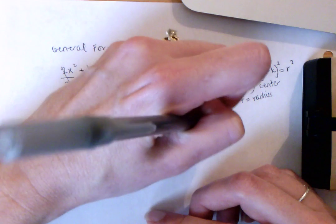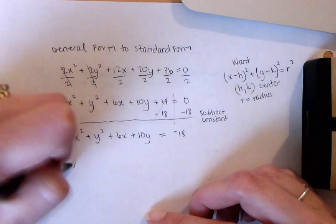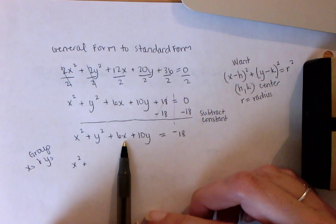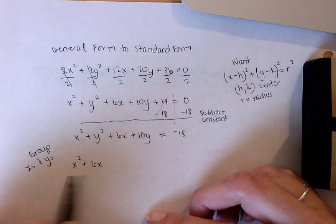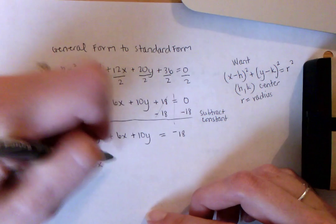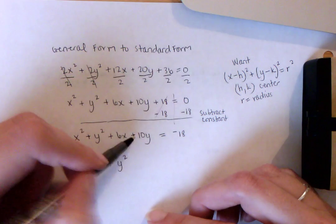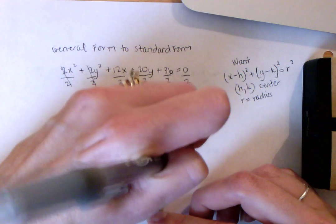Now what I need to do is group the x's and y's together. I want to do x squared plus 6x because that has the x in it, so I grouped those together, and now I'm going to group the y's together, so plus y squared plus 10y equals negative 18.